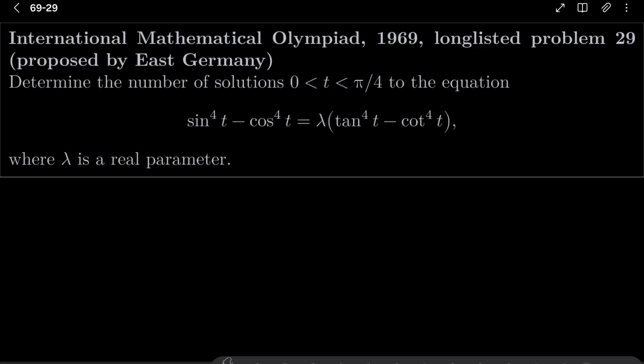Hello friends. In this video I'd like to solve the following problem from the International Mathematical Olympiad 1969, long-listed problem number 29 proposed by East Germany. We wish to find the number of solutions t between 0 and π/4 to the equation sin⁴(t) − cos⁴(t) = λ(tan⁴(t) − cot⁴(t)), where λ is a real parameter — find the number of solutions as a function of λ.